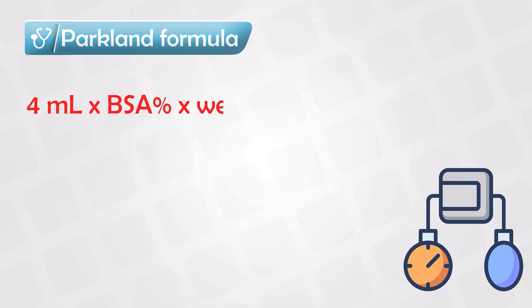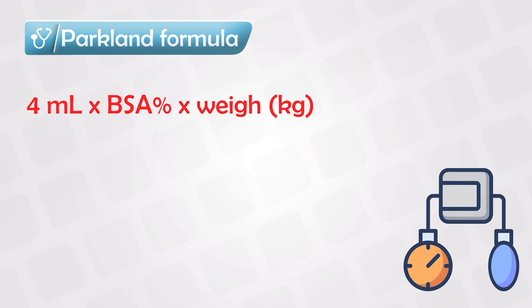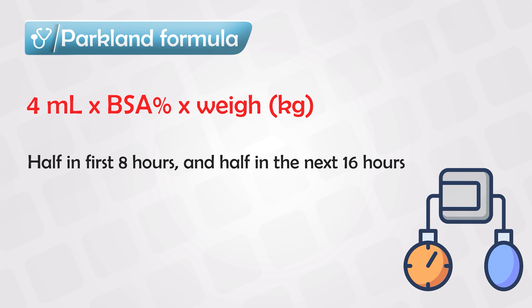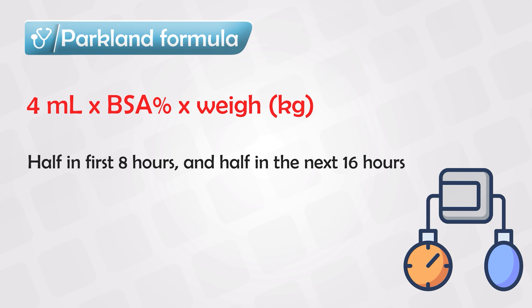Parkland's formula goes as follows: you multiply 4 ml by the body surface area and by the weight in kilograms. You get a number, give half of this amount in the first eight hours, and the other half in the next 16 hours — a total of 24 hours.